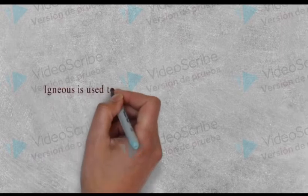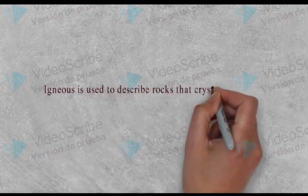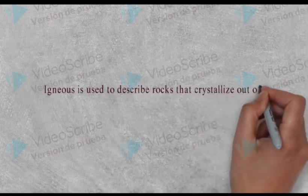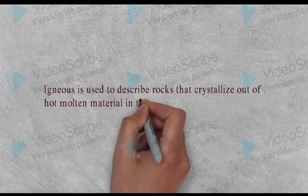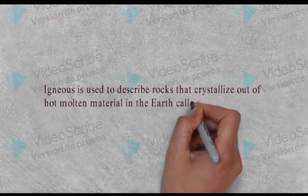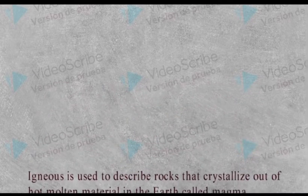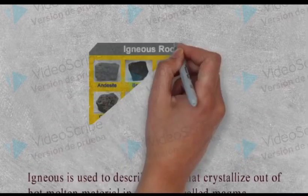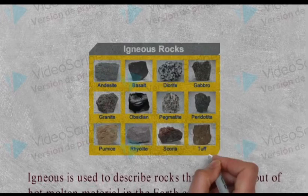What is Igneous Rock? Igneous is used to describe rocks that crystallize out of molten material in the earth called magma. You can see there in the picture some examples of Igneous Rocks.